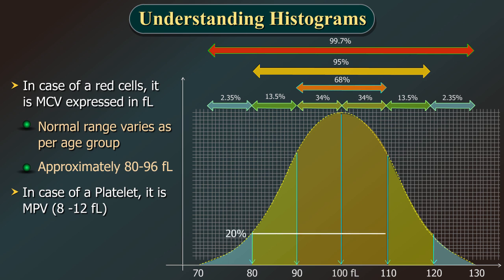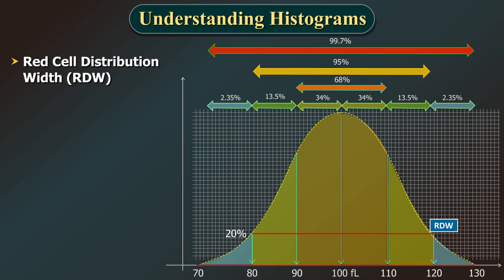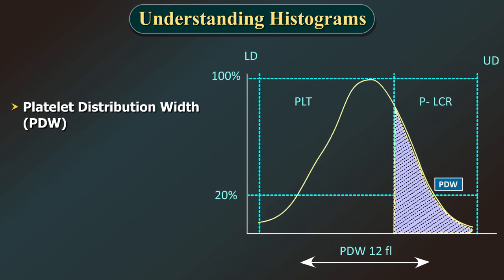Two, 20%: this point denotes the distribution width. It is the width at this point that is considered as the distribution width of the cell population. At baseline the spread was 60 FL, but at the 20% point it is lesser — possibly 48 or 50 FL. In the case of red cells, this is called the RDW (red cell distribution width), with a normal range of 39 to 46 femtoliters. RDW is also expressed as percentage CV, with a normal range of 11.6 to 14.6% in adults. For platelets, it is the PDW (platelet distribution width), normal being 9 to 14 FL.